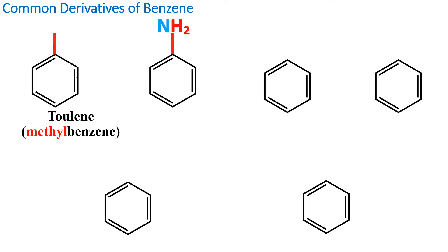The second one we're going to look at is aniline. You see I bolded the letter N in aniline because this benzene ring is attached to a nitrogen and two hydrogens.